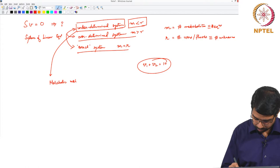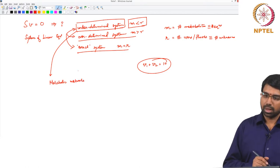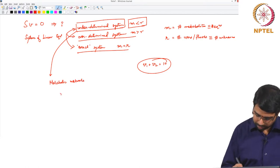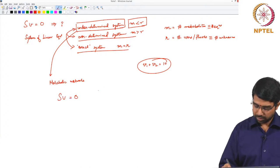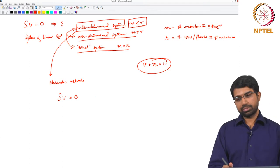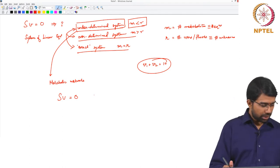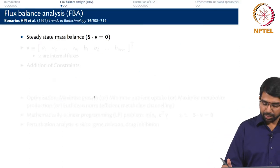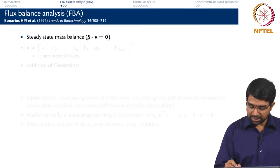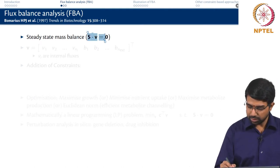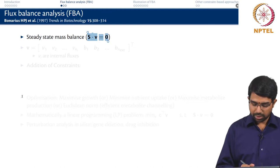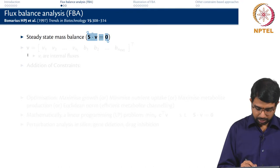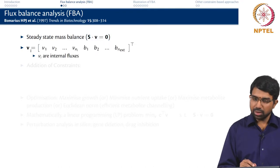So now you have a system, Sv equal to 0, how do you solve it? Let us just recap. We are looking at a steady state mass balance of Sv equal to 0, and we want to look at what is V.